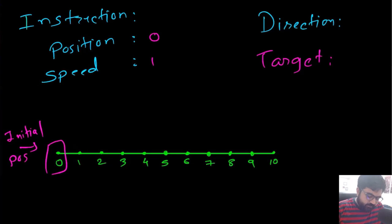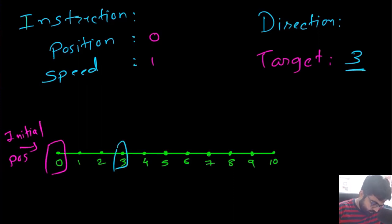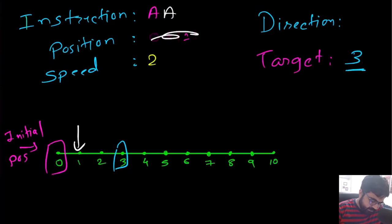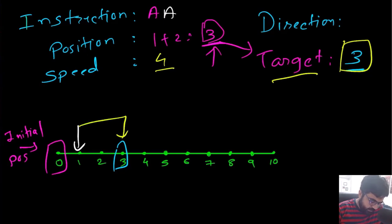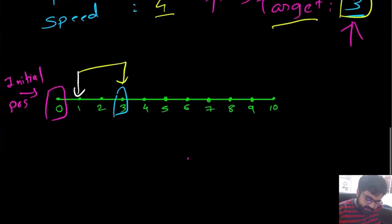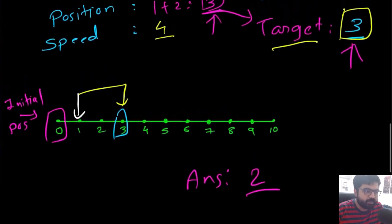For example, suppose the target value is three. If we accelerate once, position becomes one with speed two. Accelerating again gives position one plus two equals three — we've hit the target. It took two instructions, so we return two as the minimum number of instructions to reach target three.